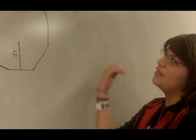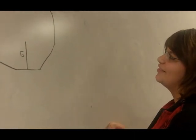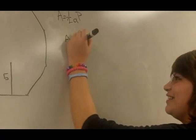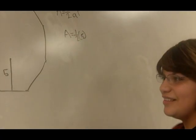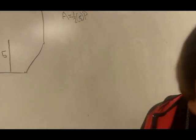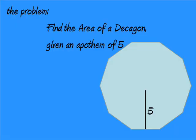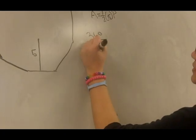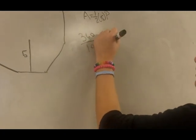We were given the apothem, so we can just fill that in. For the decagon, divide 360 by the number of sides, which is 10. That equals 36.